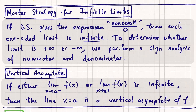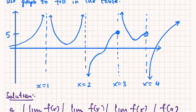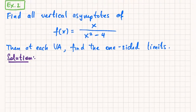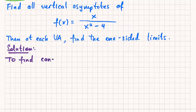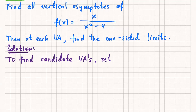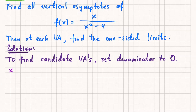We are going to see some examples where denominator equals zero does not give you a vertical asymptote. So what I want to say here is: to find candidate vertical asymptotes — I don't know that they're vertical asymptotes quite yet — set the denominator to zero. We get two candidates: x equals positive two and x equals negative two.